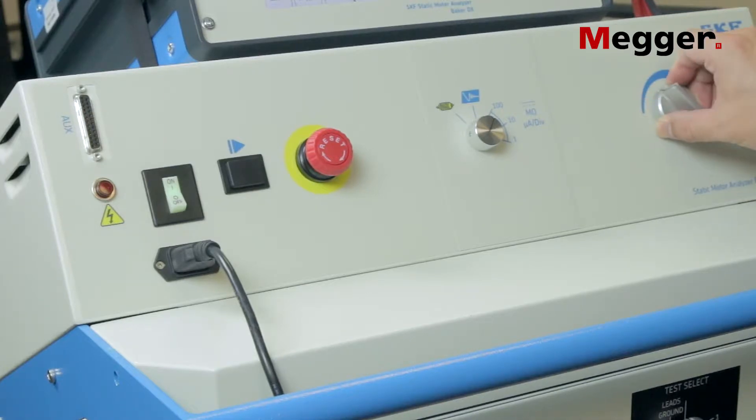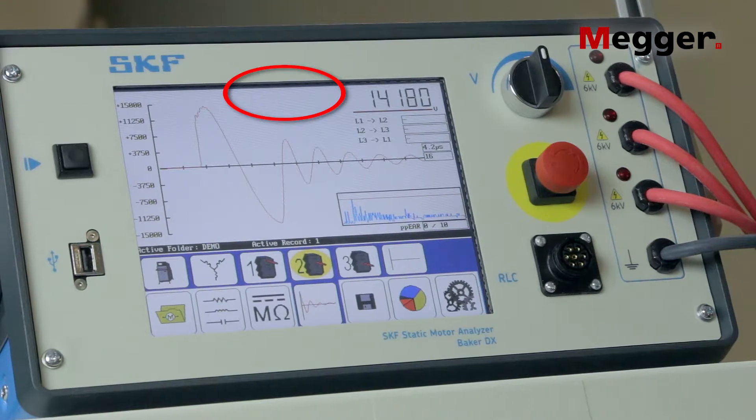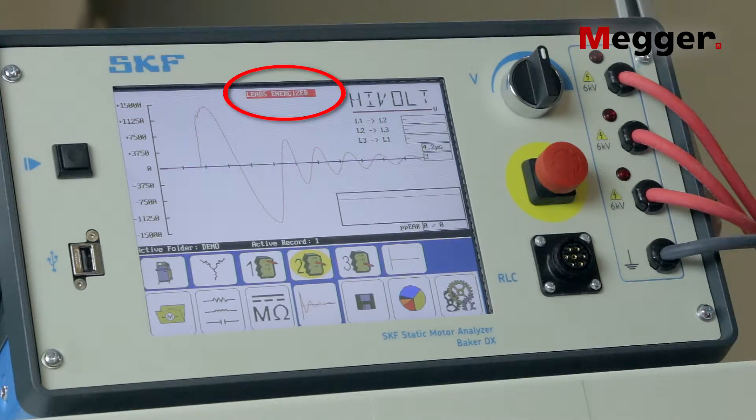Verify that the voltage control knob is set to zero. As a safety feature, any time the test leads are connected to the high voltage power supply, the warning lamps on the power pack will light up and the words leads energized will appear on the DX's screen.